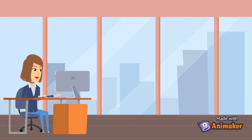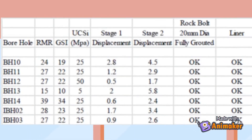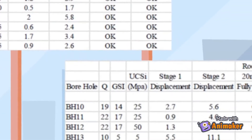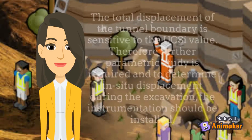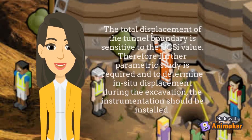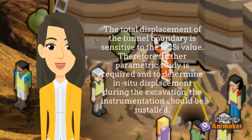The total deflection of the tunnel boundary indicates stage 2. The deflection was less than 12 millimeters and 6 millimeters for the Q and RMR systems respectively. The Q system support design was found to be less conservative, and hence the total deflection was higher than the RMR support system. The total displacement of the tunnel boundary is sensitive to the UCS value. Therefore, further parametric study is required, and to determine in-situ displacement during excavation, instrumentation should be installed.